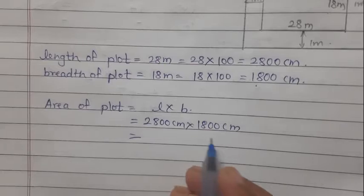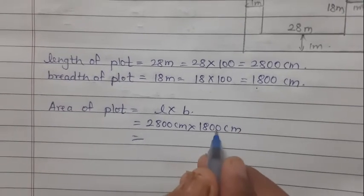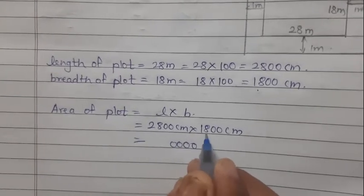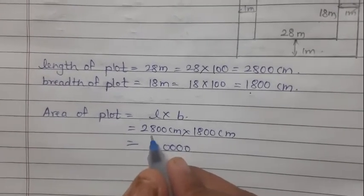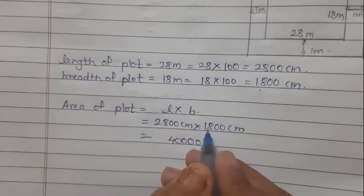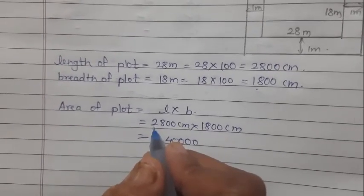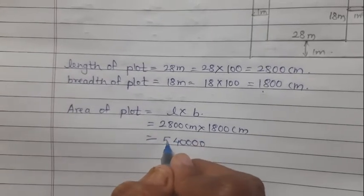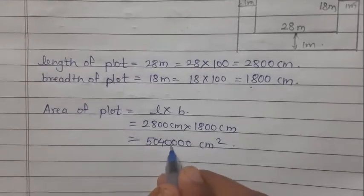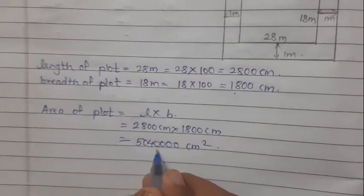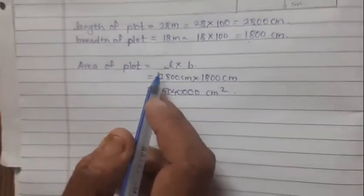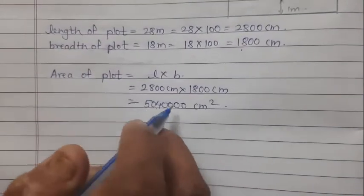Let's calculate this. Count the zeros: 28 × 18 — 18 eights are 144, carry 14; 18 ones are 18 plus 14 is 32, so 50. With four zeros total, area of plot equals 50,40,000 cm².